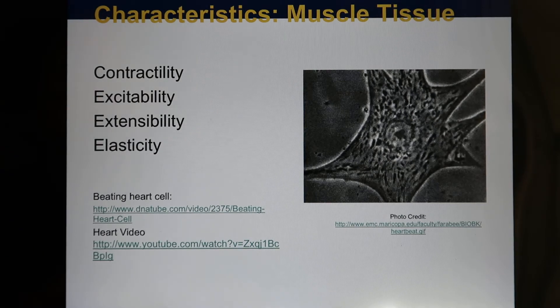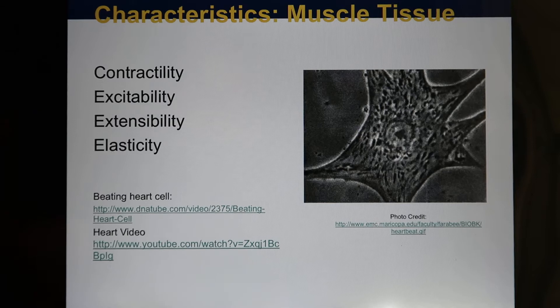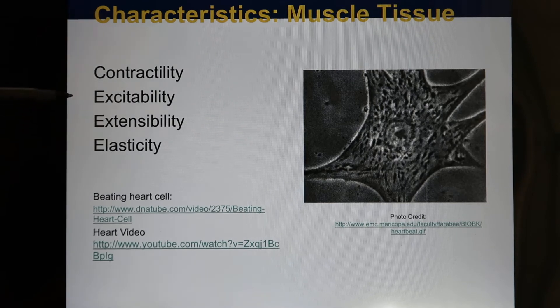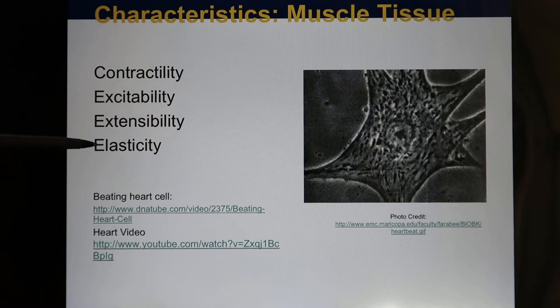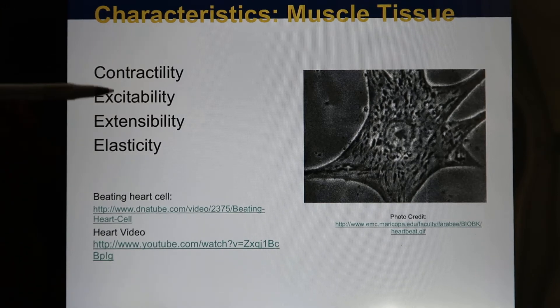Both muscle and neurons are excitable. Extensibility means they're able to increase their length. Elasticity means they're able to return to their original shape. These are the characteristics of muscle.